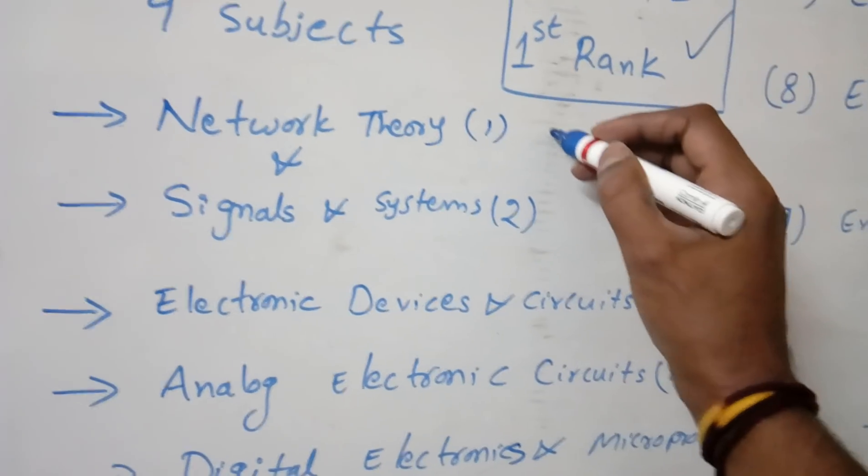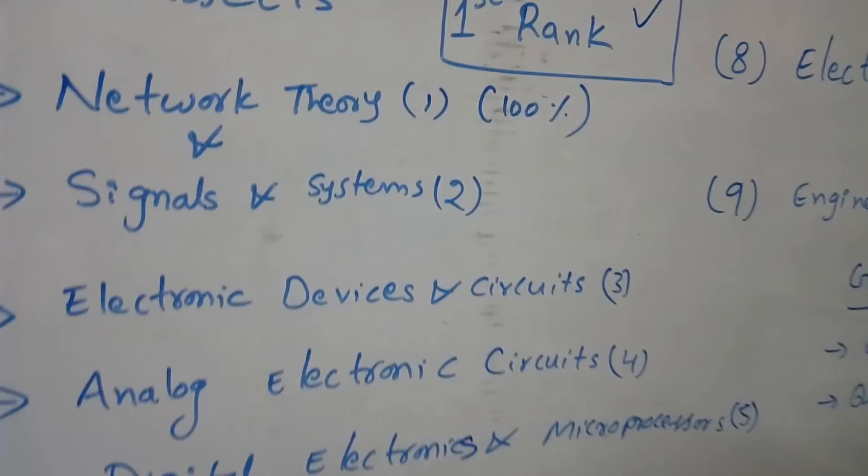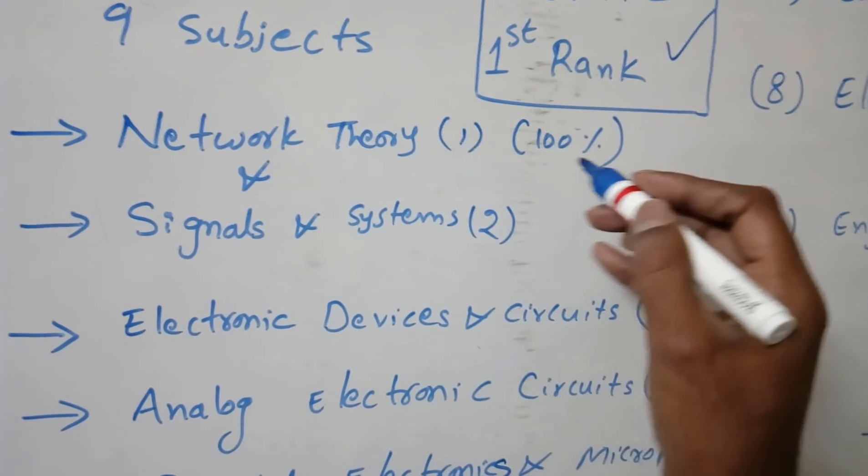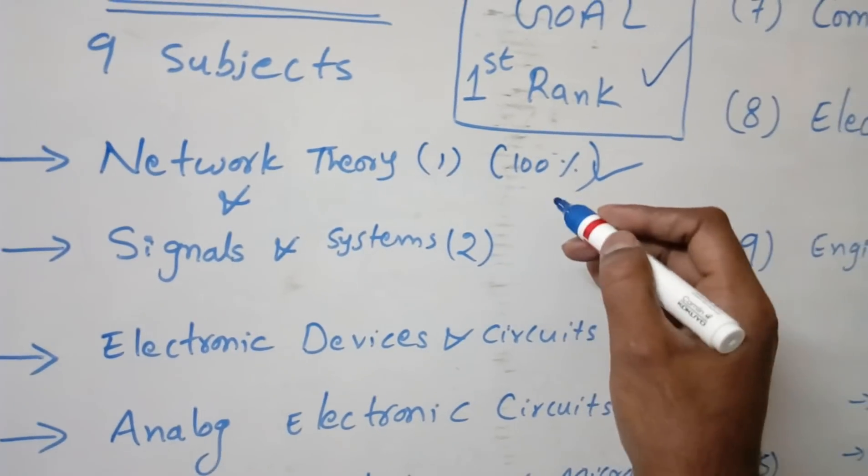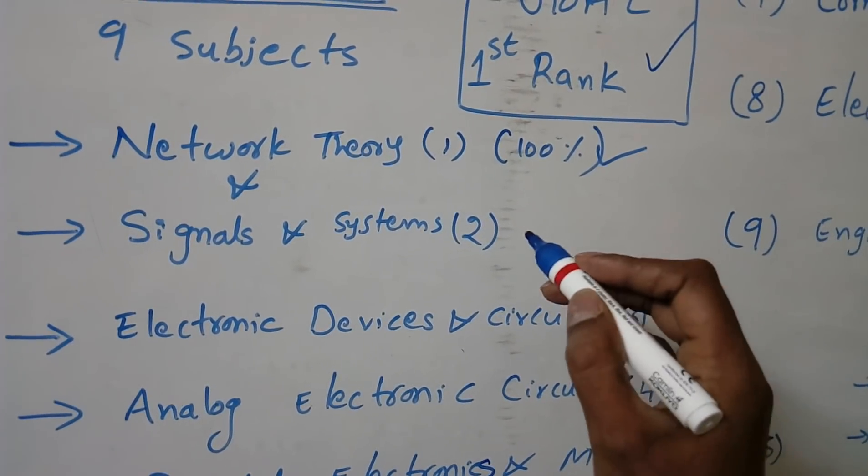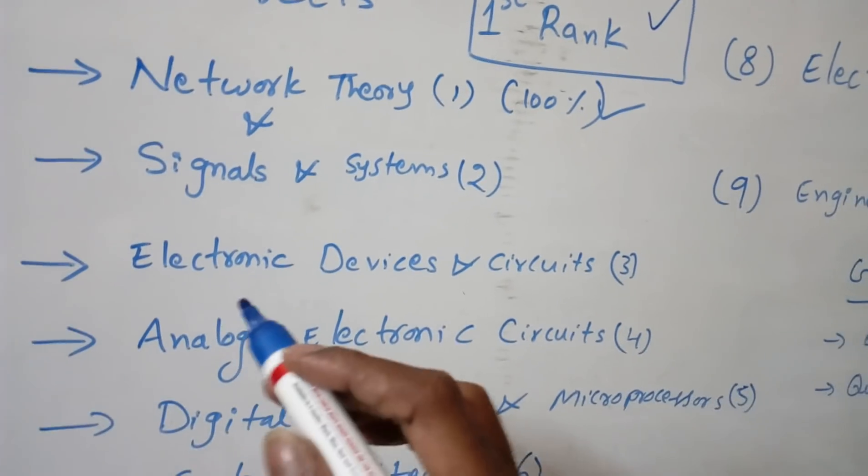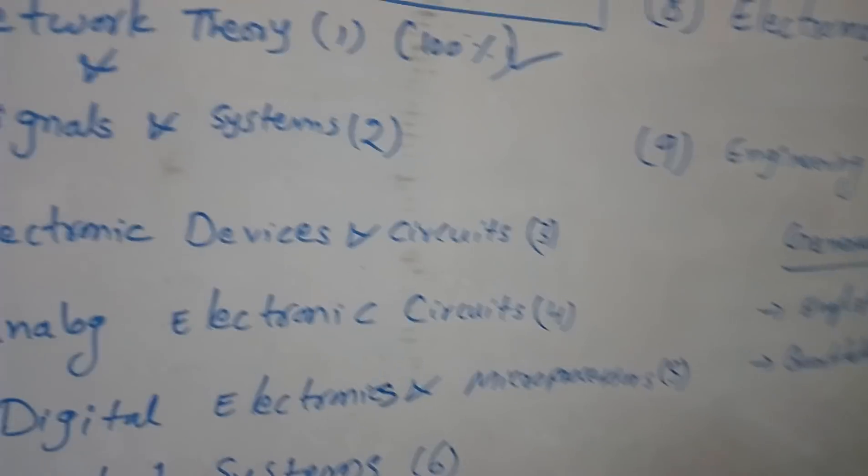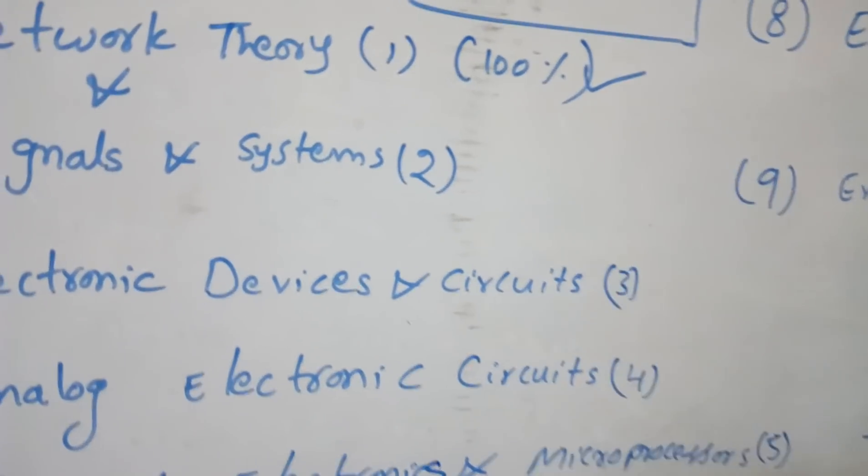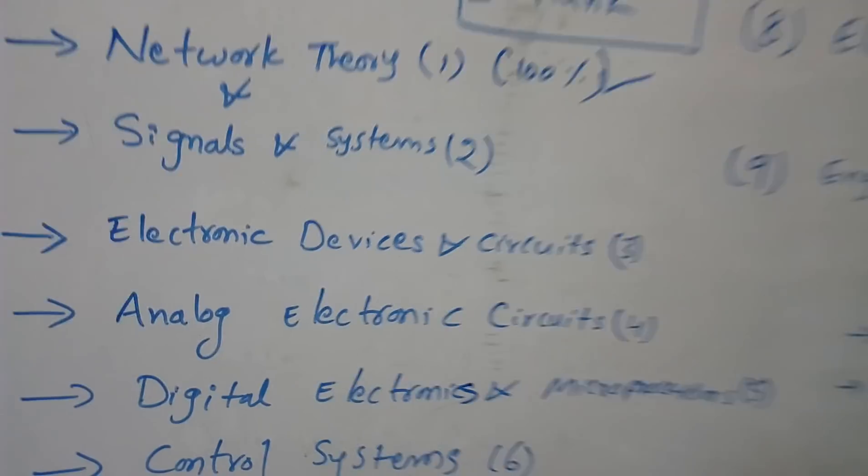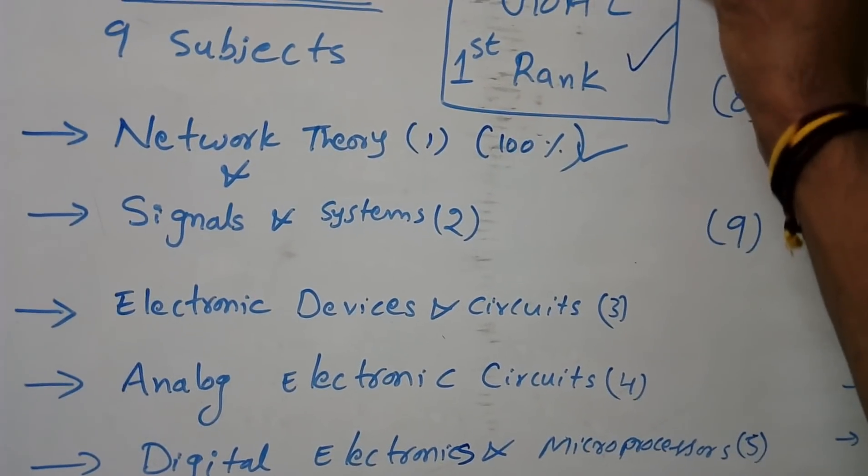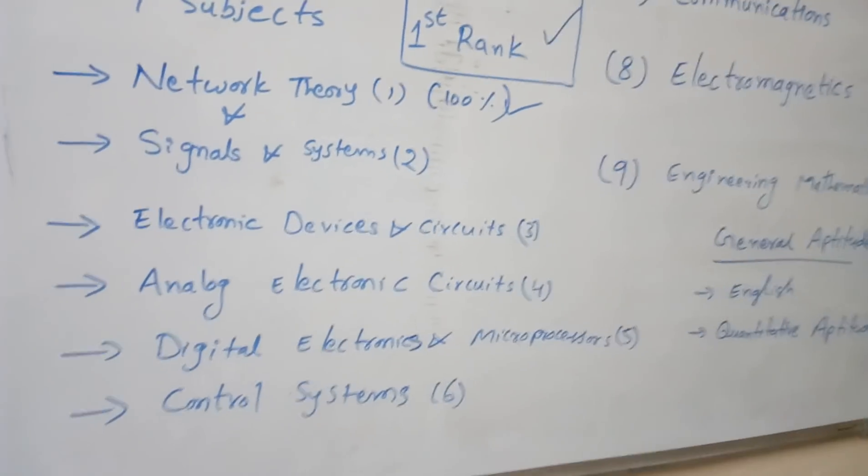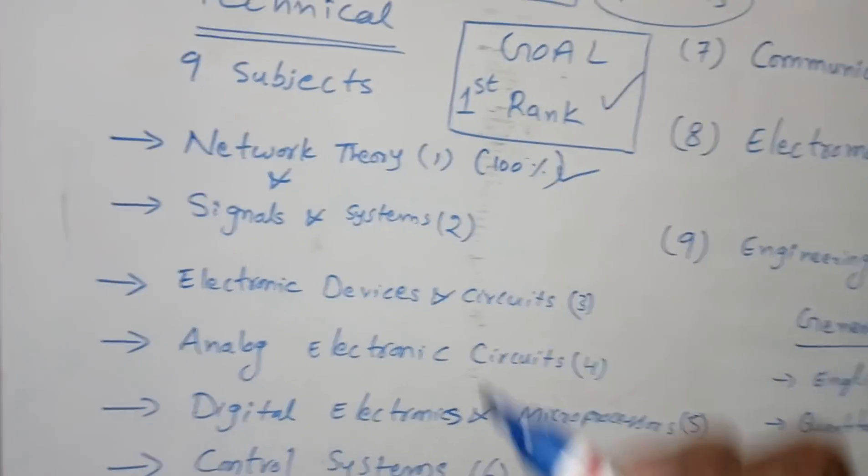If I prepare Network Theory, you should get 100 percent. Similarly Signals and Systems, you should get 100 percent. Each and every subject - we are three people who will train you to score or prepare for 100 marks this time, not just qualifying marks. Each subject we will train you for 100 percent.